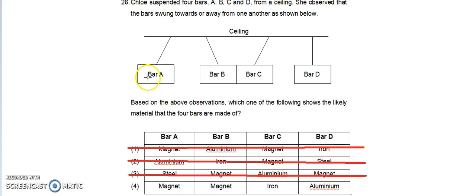The last option, bar A is a magnet which repels bar B is also a magnet and bar C is iron which is attracted to the magnet and bar D is aluminum which is a non-magnetic material which is non-reactive here. So answer is 4.